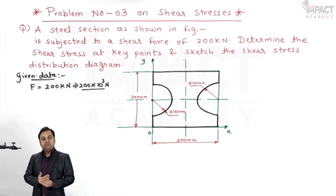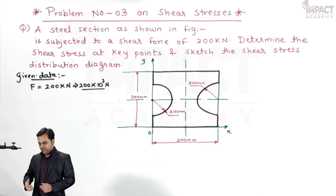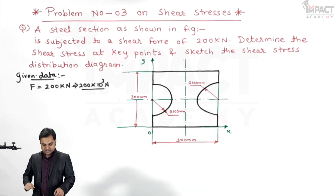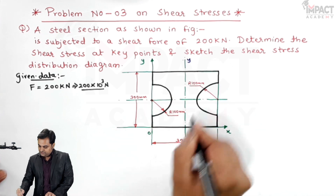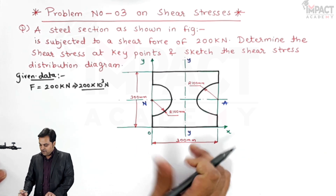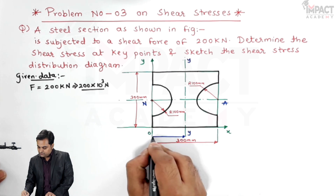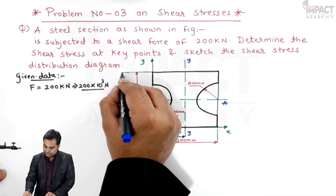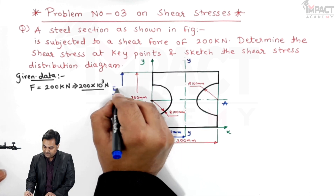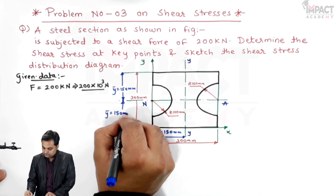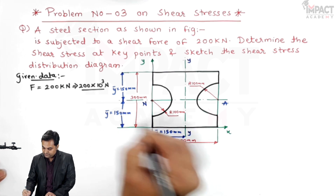Looking at this cross-section, it is a symmetrical section. We cannot exactly call it a symmetrical I-section because the variation is gradual — it is in the form of a radius, not in terms of flanges and web. It is a symmetric section. The y-axis is exactly at half, so x-bar equals 150 mm, and similarly y-bar from top and bottom is exactly half of 300, that is 150 mm.